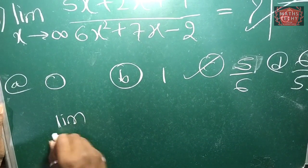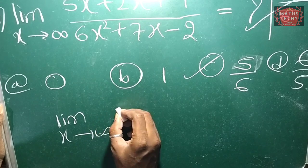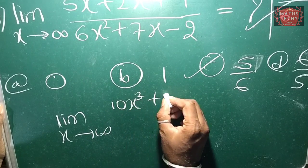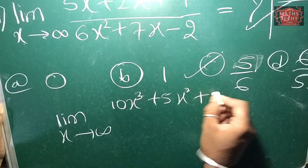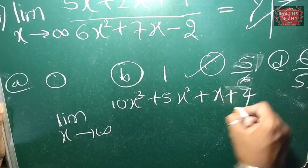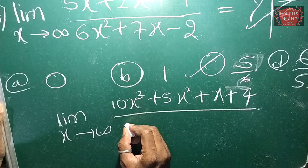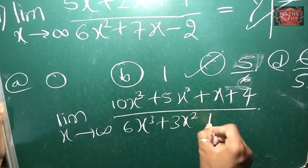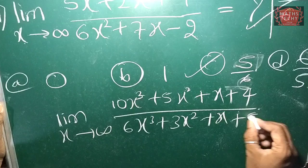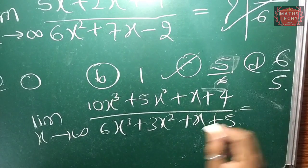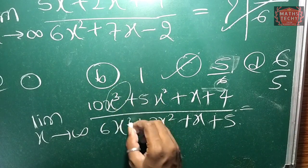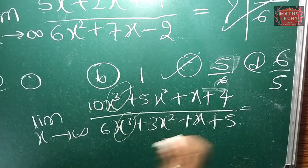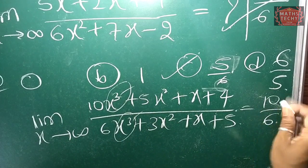Here's another example. Limit as x extends to infinity: (10x² + x³) / (6x³ + 3x² + x + 5). The solution is that you take the highest degree, which is 3. The degree is 3, so the coefficient is 10 by 6.